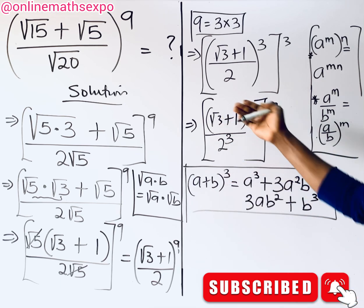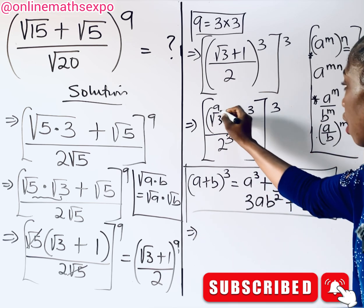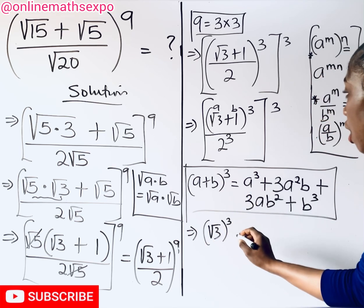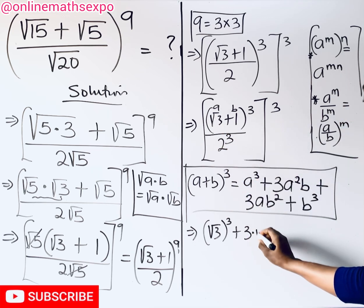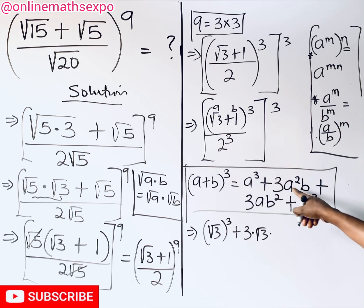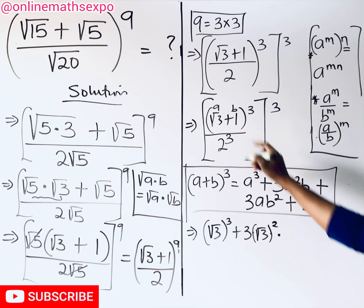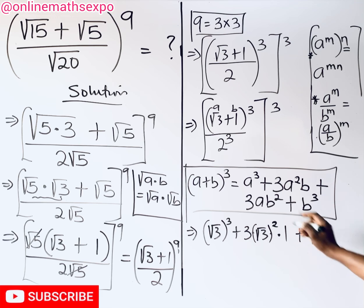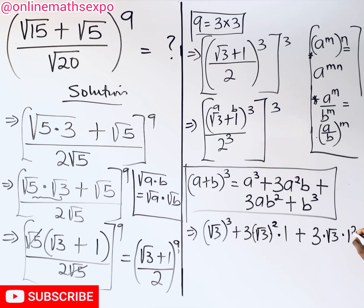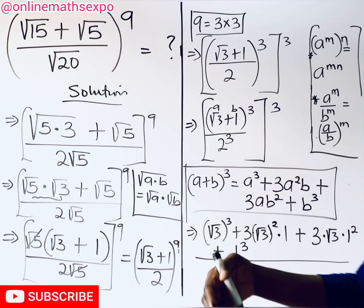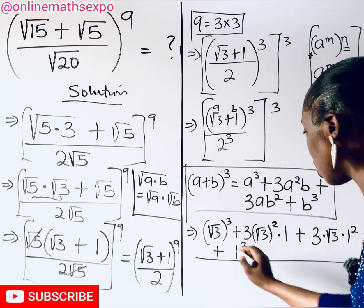Applying this with a = √3 and b = 1: (√3)^3 + 3·(√3)²·1 + 3·√3·1² + 1^3, all divided by 2^3. Since 2^3 = 8, the denominator is 8.